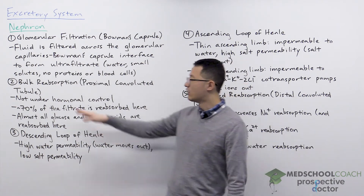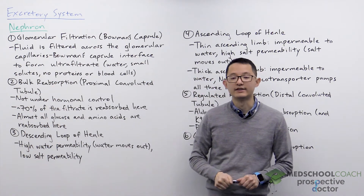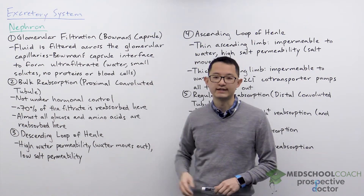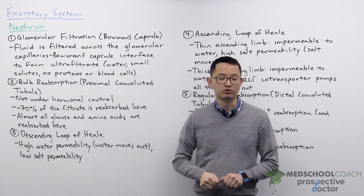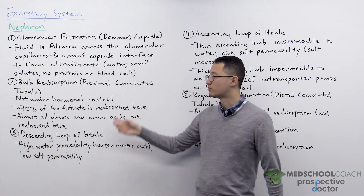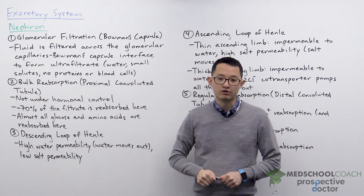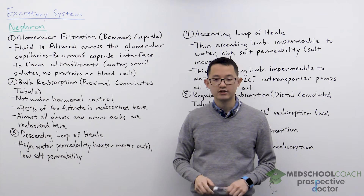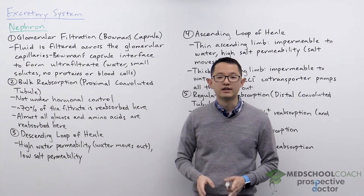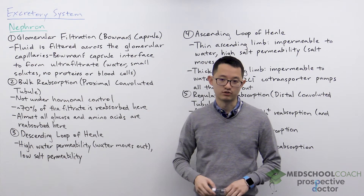Ultrafiltrate consists of water and small solutes, meaning there are no proteins or blood cells in the ultrafiltrate. There are some situations where proteins appear in the filtrate, but those occur when there is kidney damage. So under normal conditions the ultrafiltrate does not contain proteins or blood cells.